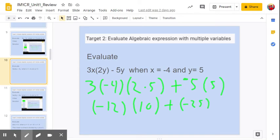Negative 12 times 10 is negative 120, plus negative 25. I'm going to add those integers up.